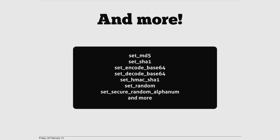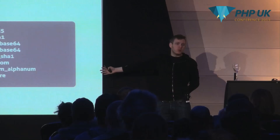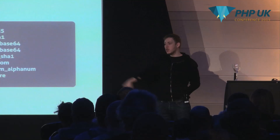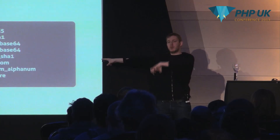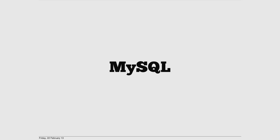The set-misc module also provides set_md5, set_sha1, base64 encode/decode, HMAC-SHA1, set_random, and secure random alphanumeric generation. You can use these to do secure downloads, API authentication, and HMAC authentication — all in Nginx without touching your application. But you can't really do that without pulling data from somewhere, either from Memcache or directly from MySQL.